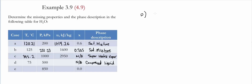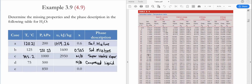Therefore, we use the saturated water table with the approximation that U is approximately equal to UF at the given temperature. This must be done at the given temperature, so we go to Table A4 at 75°C and use UF, which is equal to 313.99, and that will be the value of internal energy.